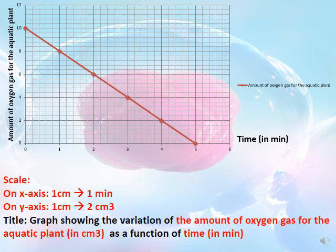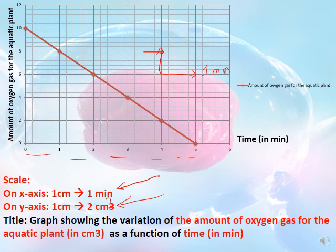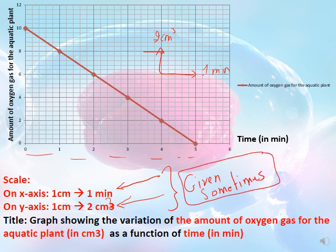For the scale: on the x-axis, every one centimeter corresponds to one minute; on the y-axis, every one centimeter corresponds to two centimeter cubes. The graph must be drawn using a pencil only. You must also move according to the scale — you cannot skip values. For example, you cannot jump from zero to four and then six; you must move two by two consistently from the beginning.